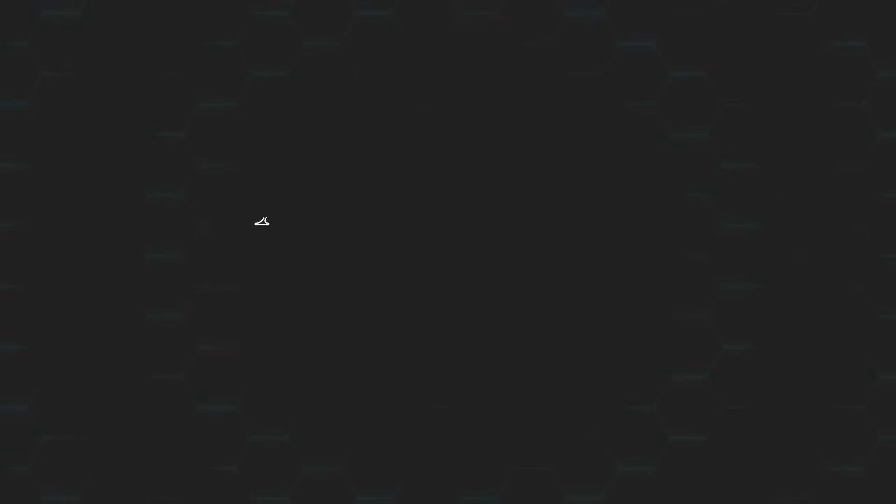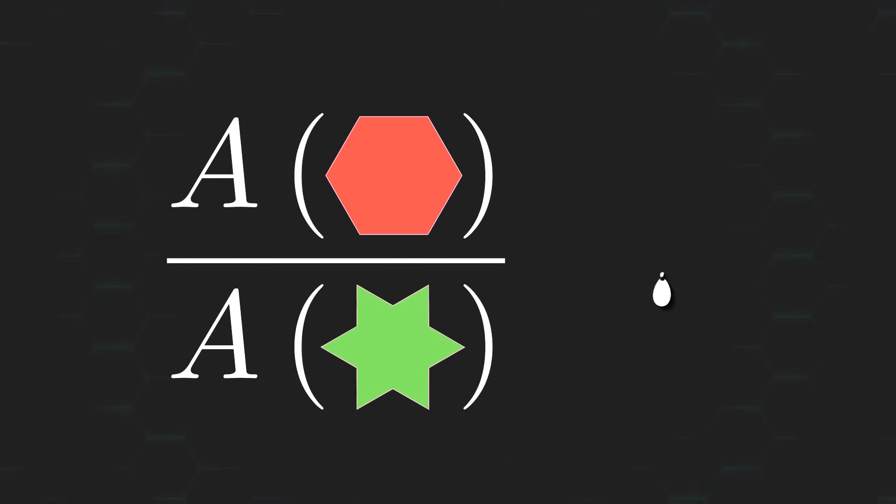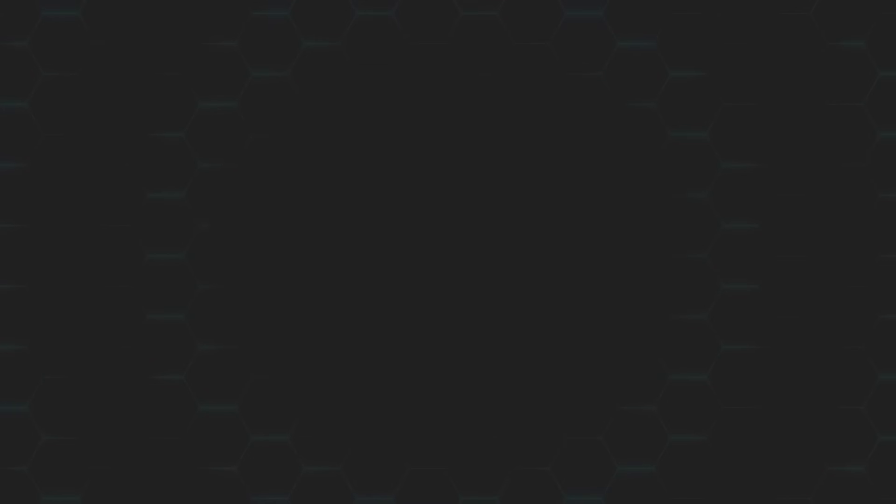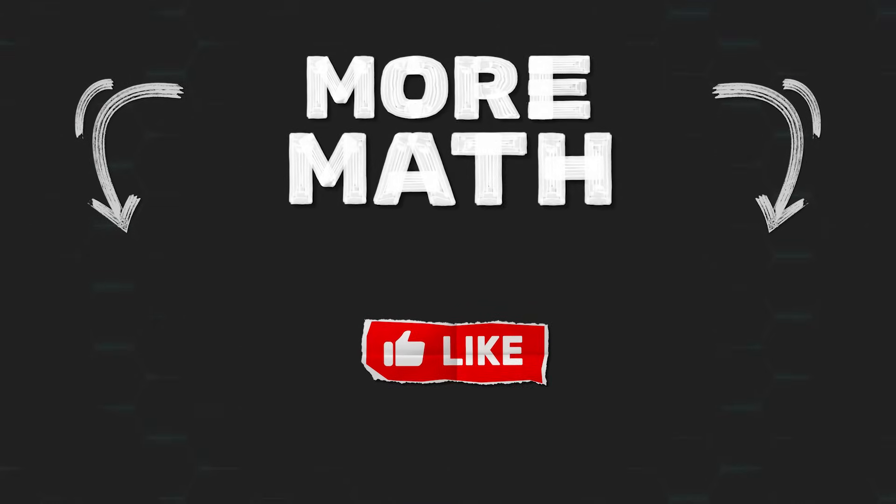Alright, here's a similar question for you to think about. If we start off with a hexagon as opposed to a pentagon this time, and again, inscribe a star within it in a similar fashion, then what is the exact ratio between the area of the hexagon and the area of the star? I'd love to hear your thoughts and ideas in the comments below. And if you enjoyed the video, don't forget to leave a like, it really helps the channel out. And while you're at it, subscribe for the many more math puzzles coming very soon.